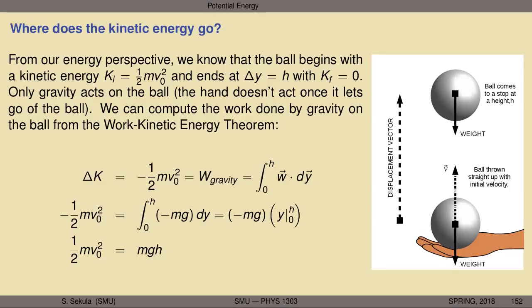We can compute the work done by gravity on the ball using the work-kinetic energy theorem — that is, changes in kinetic energy are equal to the work done by or on the object. So the change in kinetic energy equals final minus initial kinetic energy: zero minus one-half mv₀², which yields negative one-half mv₀². One-half is positive, mass is always positive, and speed squared is positive, so this overall is a negative number. Kinetic energy declines — it is sapped from the ball by gravity.